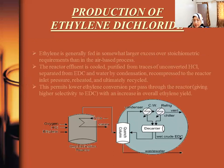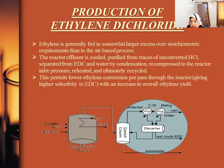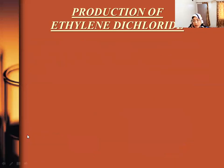In the oxygen technique, ethylene is generally fed in somewhat larger excess over the stoichiometric requirement than in the air process. The reactor effluent is purified from traces of unconverted HCl, separated from ethylene dichloride and water by condensation, recompressed to reactor inlet pressure, reheated, and ultimately recycled back. This permits lower ethylene conversion per pass through the reactor with an increase in overall ethylene utilization.